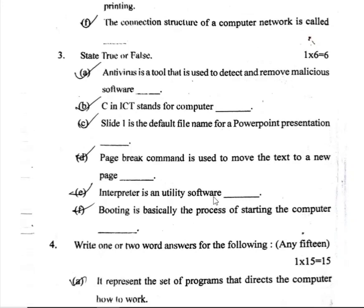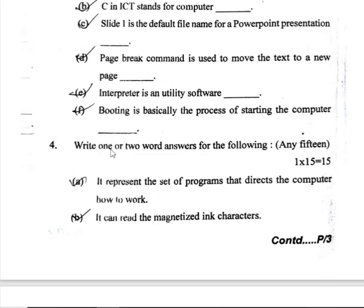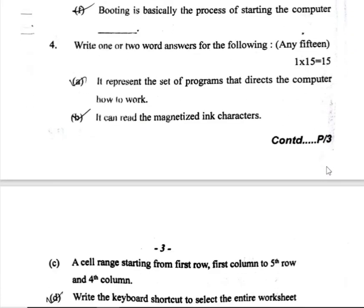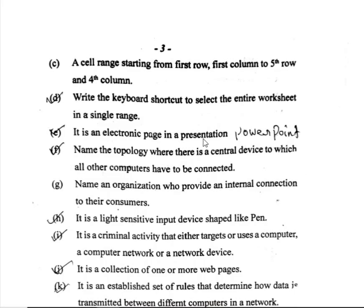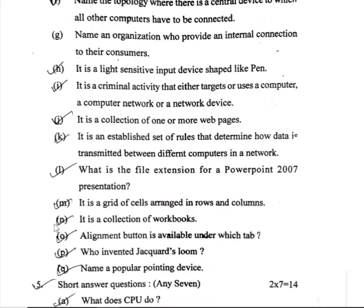True or false, one to six marks. An interpreter is a utility software. Then write one or two word answers for the following, one to fifteen marks. It can read the magnetized link characteristics. It is an electronic page in a presentation. It is a collection of one or more web pages. It is a collection of workbooks.